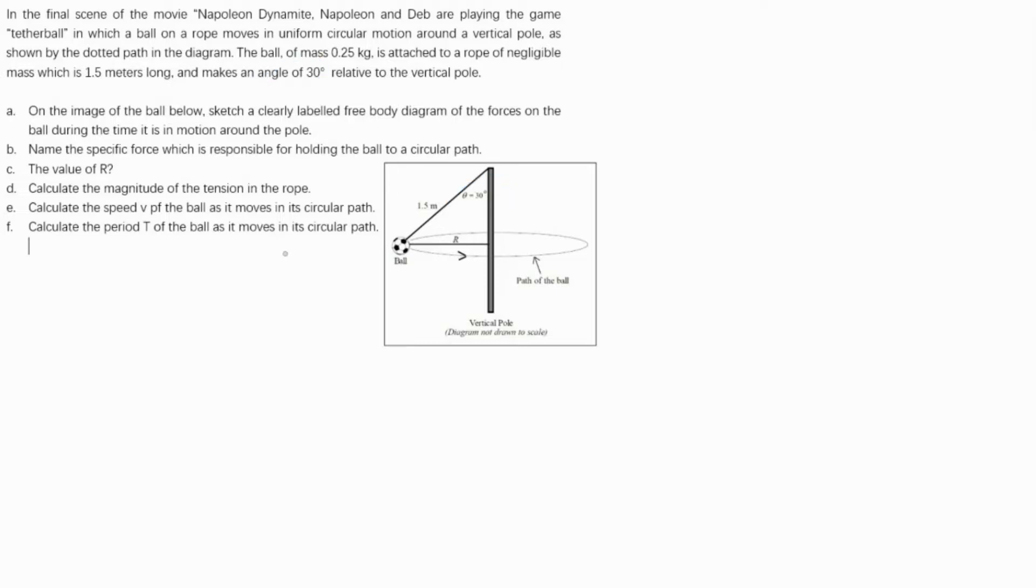The first part asks to sketch a clearly labeled free body diagram of the forces on the ball during the time it is in motion around the pole. The first force will be the tension, and the second force will be the weight force which is mg. Its mass is 0.25, so it will be 0.25g downward.